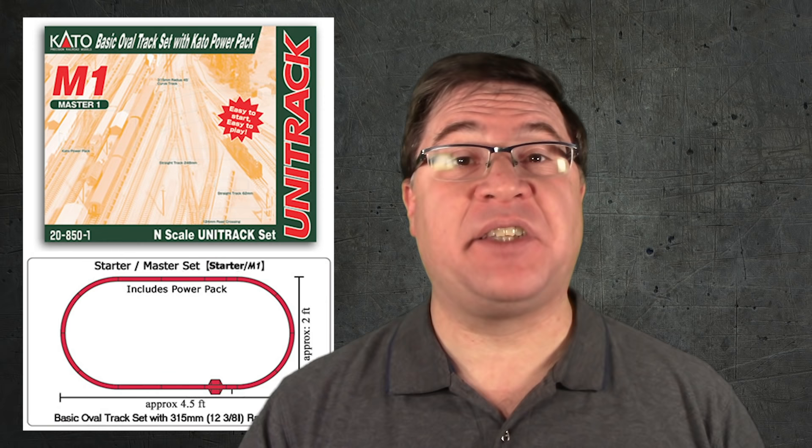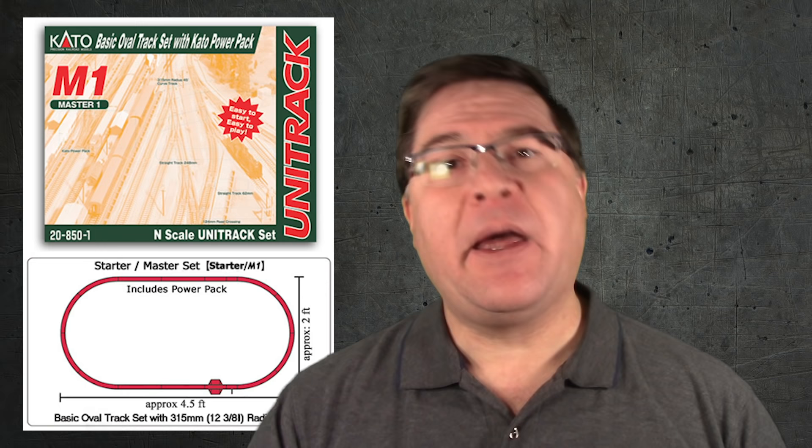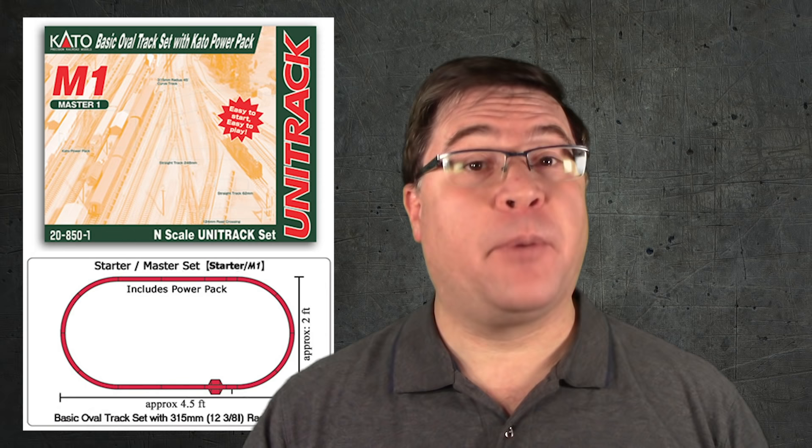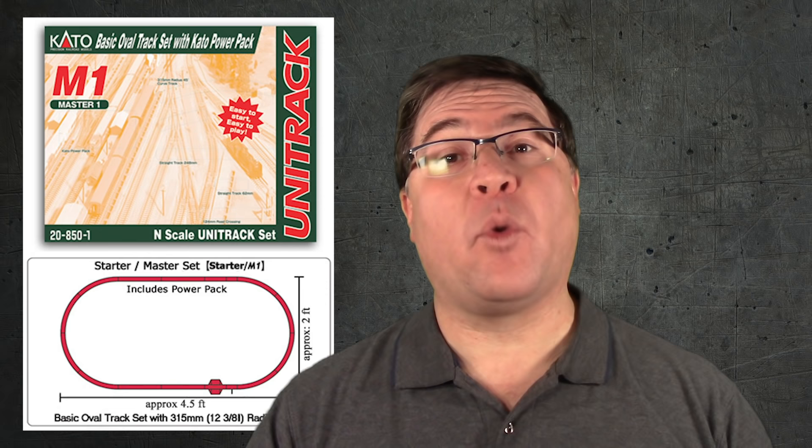The basic loop that comes in the M1 pack and starter kits is about 630 millimeters wide and a little over 1300 millimeters long. That works out to about 26 inches wide by about 52 inches long. The curves are 315 millimeter radius, just over 12 and 3 eighths of an inch, and this will easily handle pretty much any end scale locomotives or rolling stock. Kato makes curves that are both wider and tighter than this. So it's right in the middle of the pack.